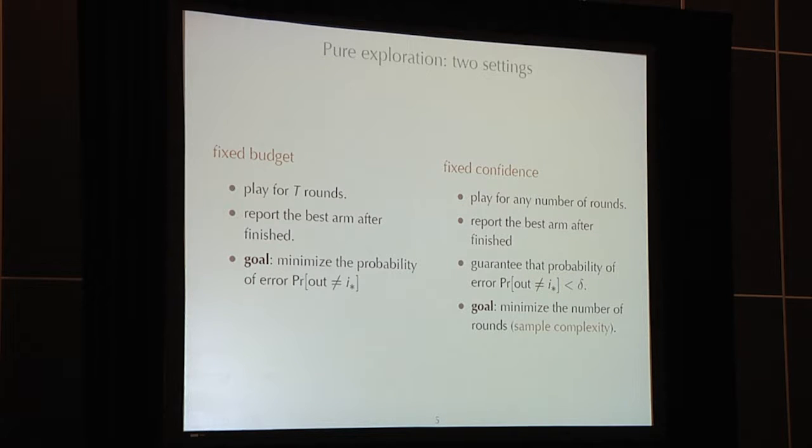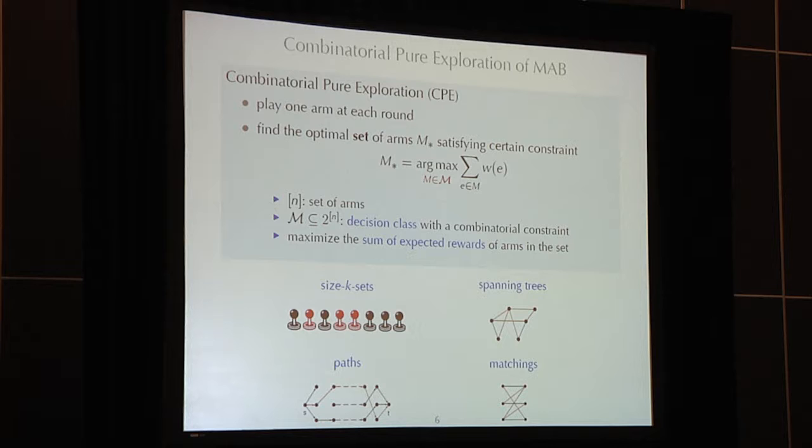For pure exploration, there are two variants of problem formulations. The fixed budget formulation asks that you only play capital T runs. That's fixed, and at the end, you want to report one arm, and you want to minimize the probability that what you report is not the best arm. Fixed confidence is another variant. Here, you are given a confidence requirement, delta. Delta essentially is bound on the probability of error. Your goal is to minimize the number of runs you play to reach this confidence level.